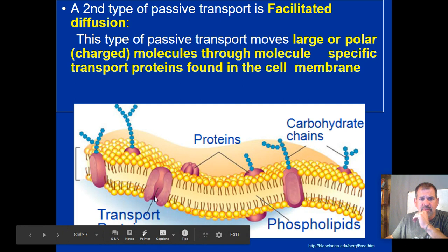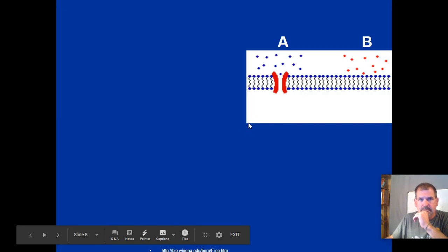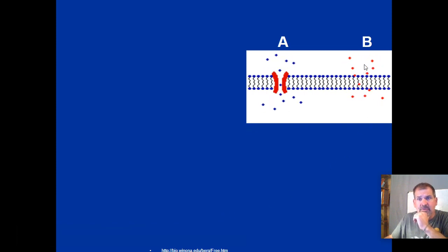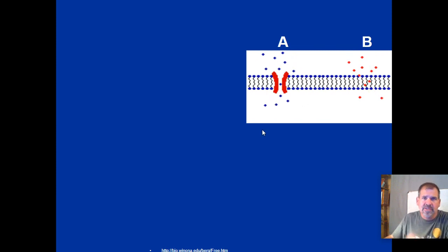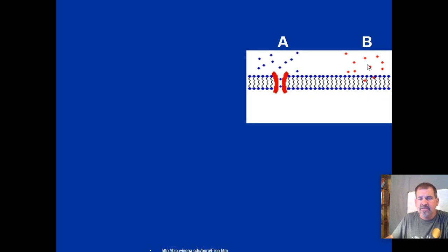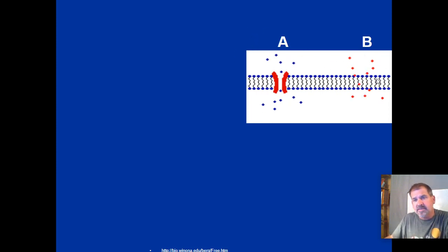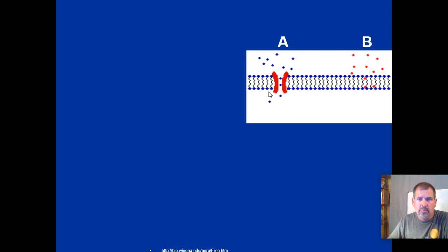Small, non-charged particles can move pretty much anywhere through the cell membrane. Larger or polar molecules move through these docking station channels or gates. Here's a graphic: regular diffusion on the left — particles are small and non-charged so they move right through. The charged blue particles on the right can't pass directly so they move through the docking station. Both diffusion and facilitated diffusion are types of passive transport.